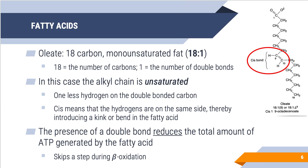If we move on to oleate, which is 18 carbons and monounsaturated, meaning it has one double bond — this is different from palmitate which has zero double bonds. The alkyl chain is unsaturated, meaning there is one less hydrogen on the double-bonded carbon because we can only form four bonds; two are taken up by the double bond and the remaining two are hydrogens. Oleate is in the cis formation, meaning the hydrogens are on the same side, producing a kink or bend in the fatty acid molecule. If they're on opposite sides, they'd be in a trans configuration. Once oleate undergoes beta oxidation to produce acetyl-CoA, it actually produces less ATP because we need to break down that double bond into a single bond before continuing beta oxidation, and this is energetically costly.